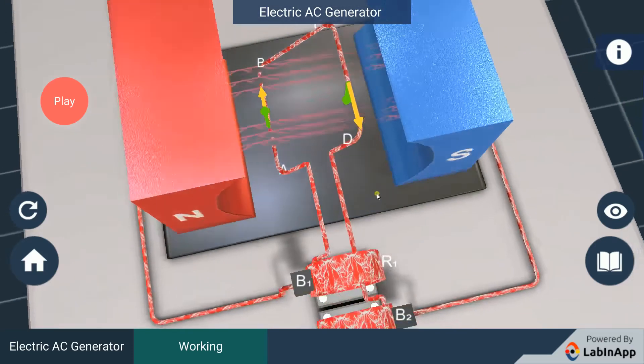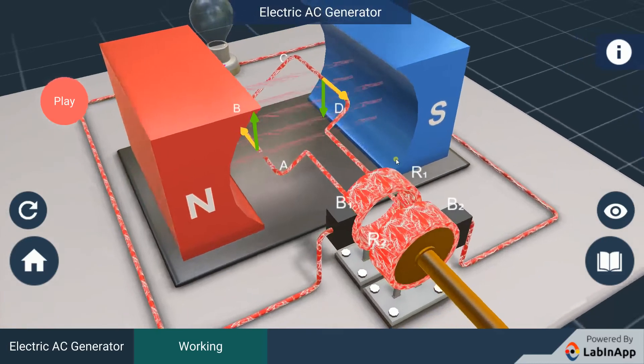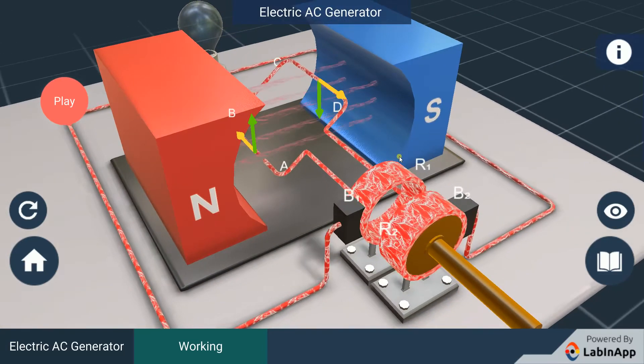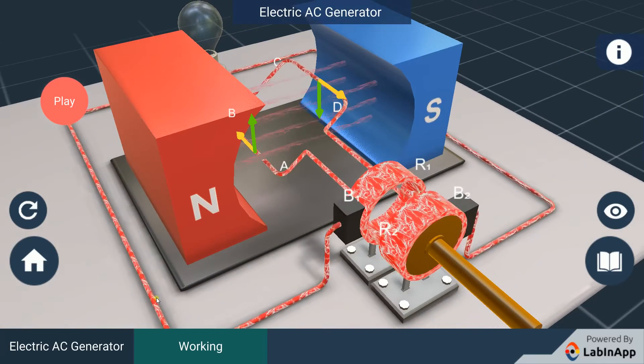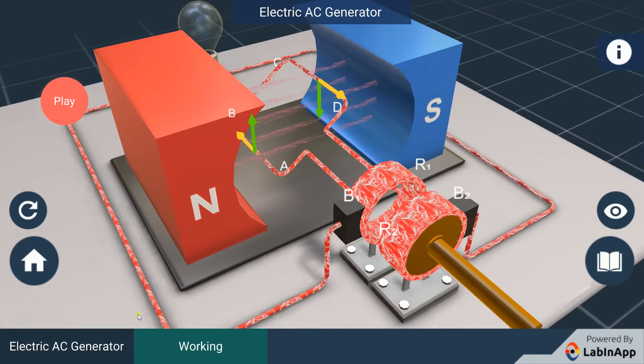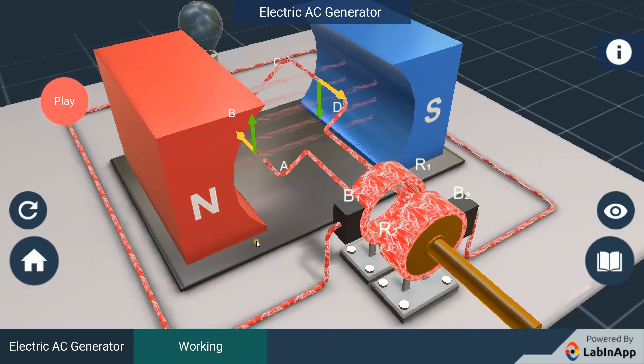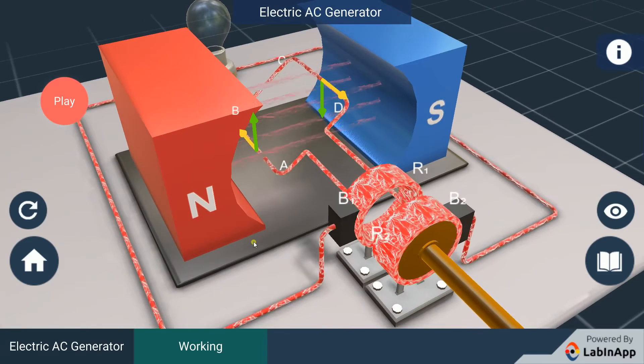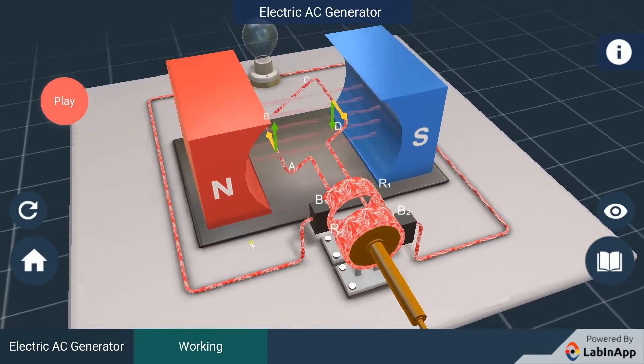If there are larger numbers of turns in the coil, the current generated in each turn adds up to give a large current through the coil. This means that the current in the external circuit flows from B2 to B1.